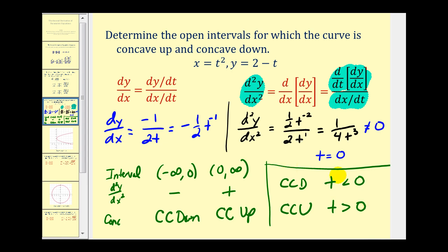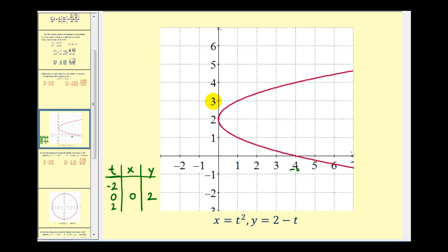Before looking at the graph, let's find the point when t equals zero. When t is zero, x is zero and y is two, so we're at the point (0, 2). To determine the orientation of the curve, when t equals negative two, x is four and y is two plus two equals four — the point (4, 4). When t equals positive two, x is four and y is two minus two equals zero — the point (4, 0).